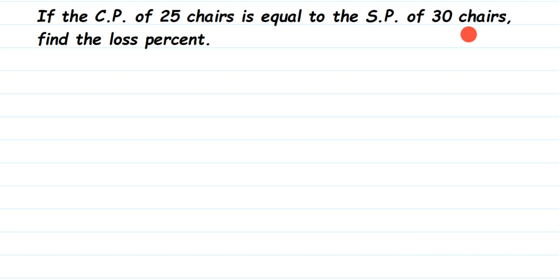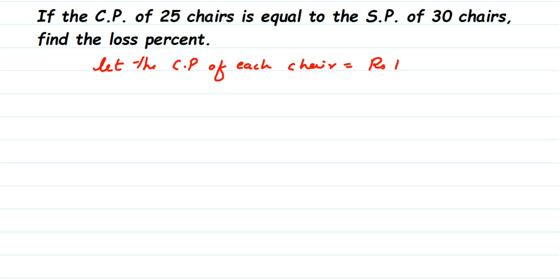This is just an assumption, not the actual value. The loss percentage will remain the same regardless. So let the cost price of each chair be equal to ₹1. Now, they're talking about 25 chairs and 30 chairs. I'll take 30 chairs here because we're comparing selling price and cost price. So the cost price of 30 chairs will be equal to ₹30, since one chair is ₹1.